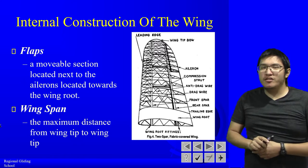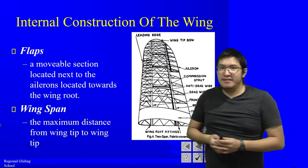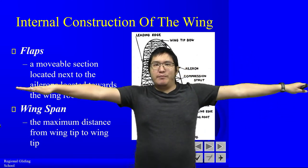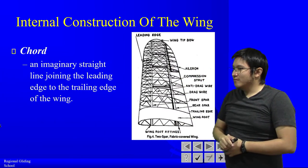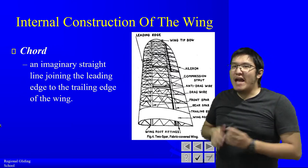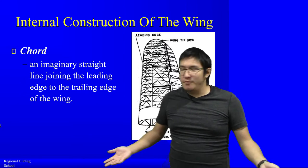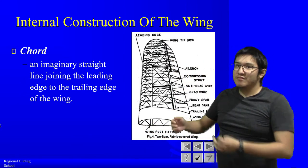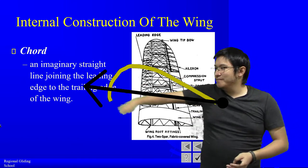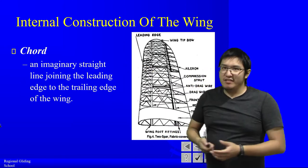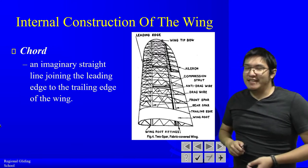Next up is an important term: the wingspan. The wingspan is the maximum distance from wing tip to wing tip. Then there is the chord — an imaginary straight line used for design or calculation purposes. If you think of the shape of the wing and imagine a line cutting right through it, that would be the chord. It joins the leading edge and the trailing edge of the wing. You will see how this applies in future lessons.